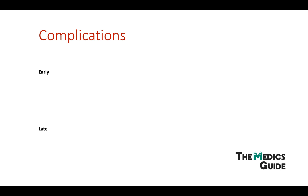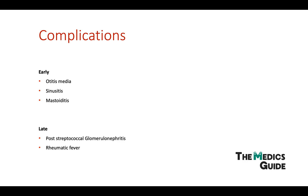I've split the complications into early and late. In the early phase we can get otitis media, sinusitis, and mastoiditis. More important to remember are the late complications: post-streptococcal glomerulonephritis, which typically occurs two to three weeks after the infection and may present with signs of nephritic syndrome like hypertension, hematuria, and reduced urine output. The other important one is rheumatic fever — keep those two in mind.